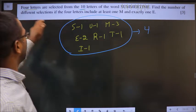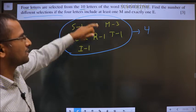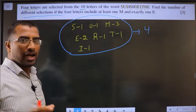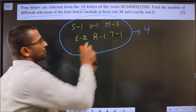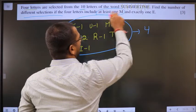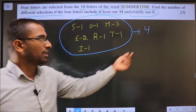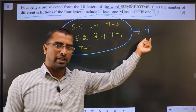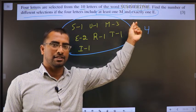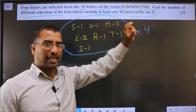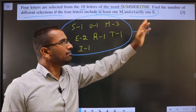Find the number of different selections if the 4 letters include at least one M and exactly one E. In the selection of 4 letters, your 4 letters should satisfy this condition: at least one M and exactly one E.